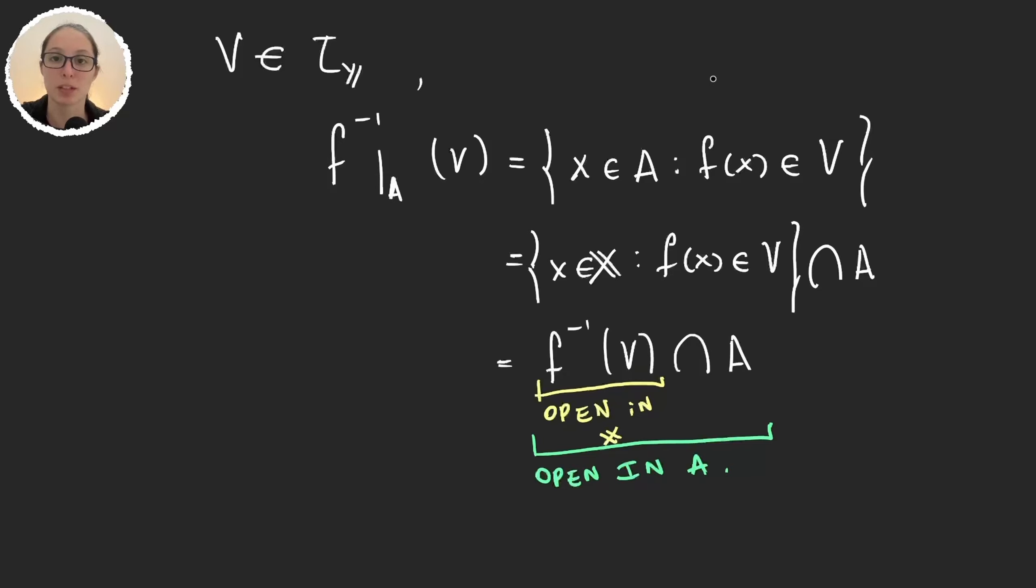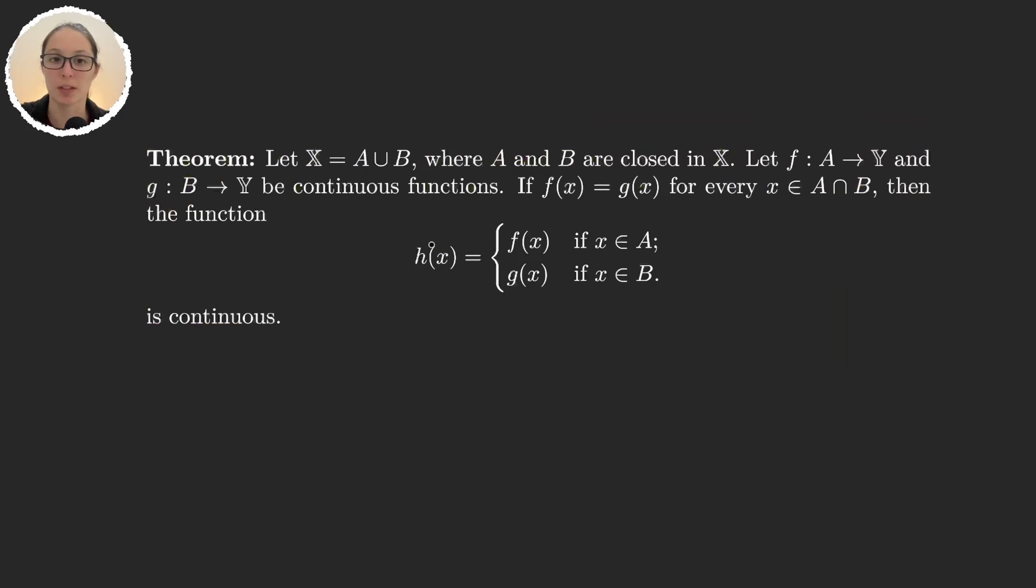Let's finish this video with a very famous lemma that you have probably been using a lot with regular functions, but now we know that it would also be true in topological spaces. This theorem that is also known as the pasting lemma tells us that we have two functions with two domains that are actually forming our whole space. So f goes from a to y, and g from b to y. These two functions are continuous. Then it tells us that if they have the same values for all the elements in their intersection, then this function that is basically just pasting f and g is continuous.